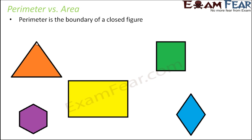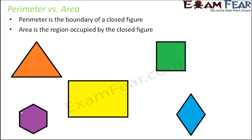For example, if you consider this triangle, the sum of the lengths of the three sides gives you the total length of the boundary. Similarly for the square, the sum of the four sides gives its perimeter. For a hexagon, you sum all six sides to get its perimeter. So perimeter is nothing but the boundary. When we talk about area, it is the entire region occupied by the closed figure — for the triangle, this entire orange colored region, the entire space enclosed by the triangle, is its area.